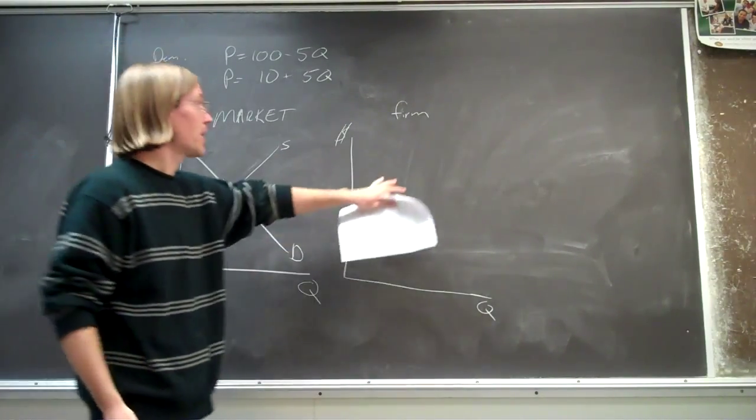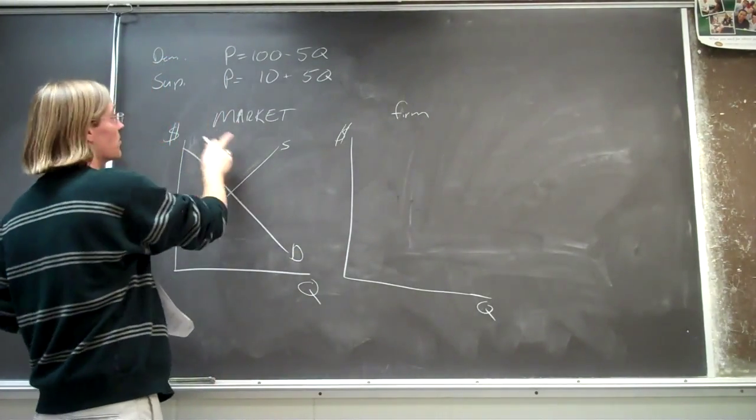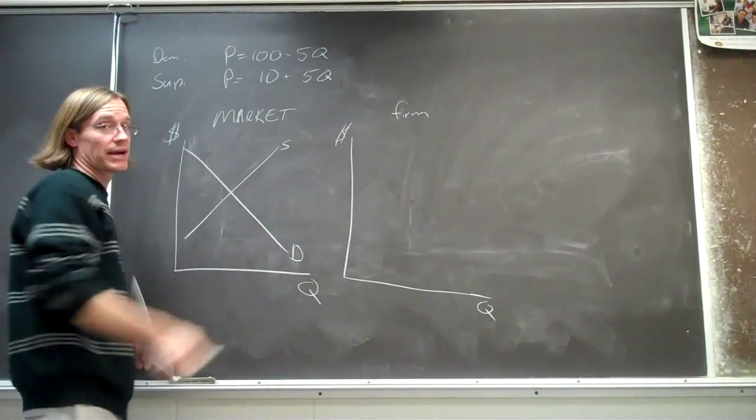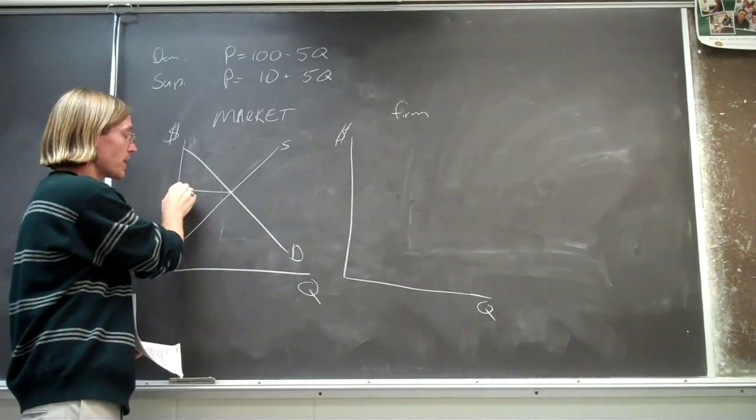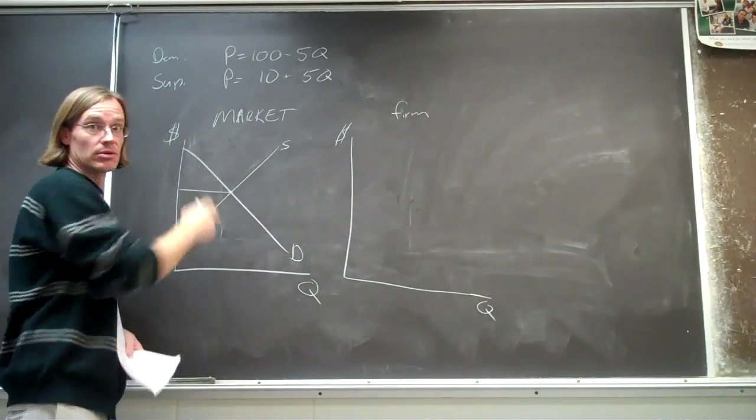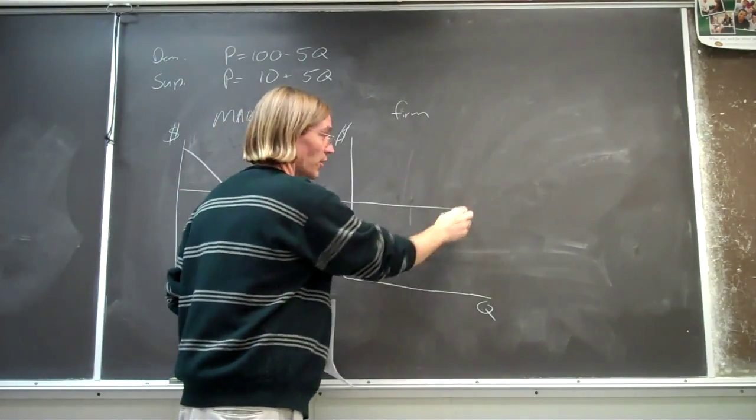So how would you figure out the price that the firm faces when given the market demand and supply curve? We can do that if we find this equilibrium price at the market level, we know that this price then feeds in to the firm level.